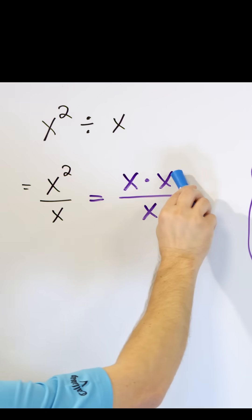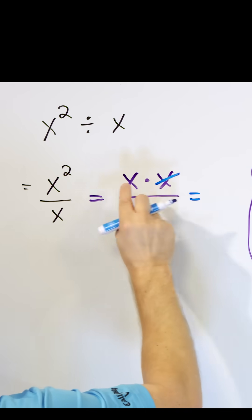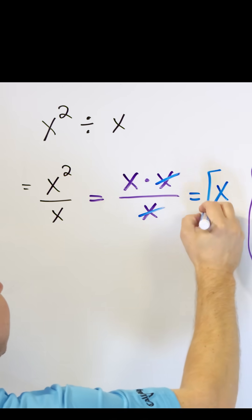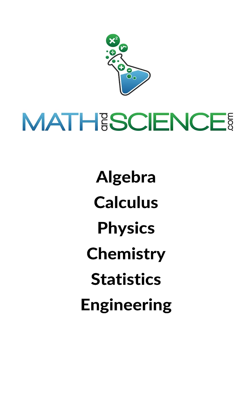So you see, I have the same thing. One of these x's in the numerator and also one of these x's in the denominator. And they cancel each other away. You can think of them dividing away, giving you 1 and the only thing you have left is a single x and so that is the answer to the question. Learn anything at mathandscience.com.